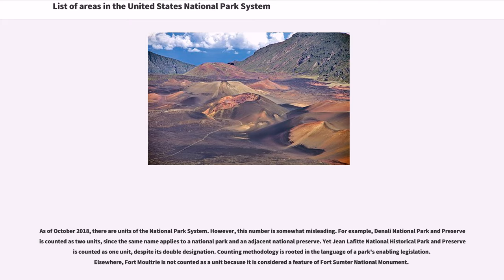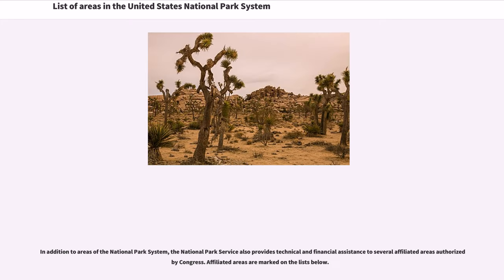However, this number is somewhat misleading. For example, Denali National Park and Preserve is counted as two units, since the same name applies to a national park and an adjacent national preserve. Yet Jean Lafitte National Historical Park and Preserve is counted as one unit, despite its double designation. Counting methodology is rooted in the language of a park's enabling legislation. Fort Moultrie is not counted as a unit because it is considered a feature of Fort Sumter National Monument. In addition to areas of the National Park System, the National Park Service also provides technical and financial assistance to several affiliated areas authorized by Congress. Affiliated areas are marked on the lists below.